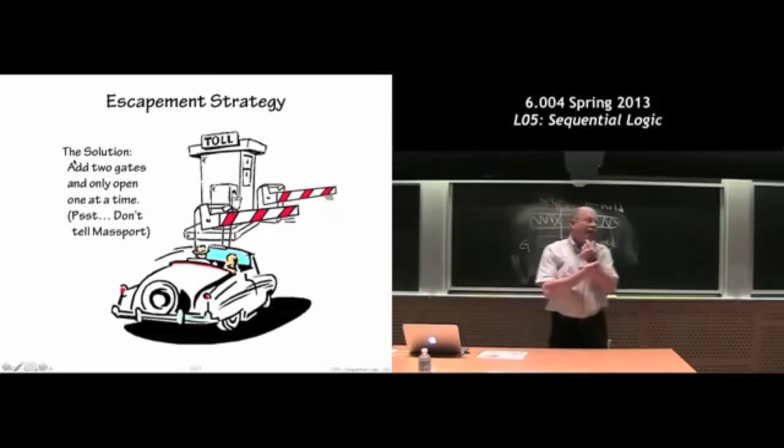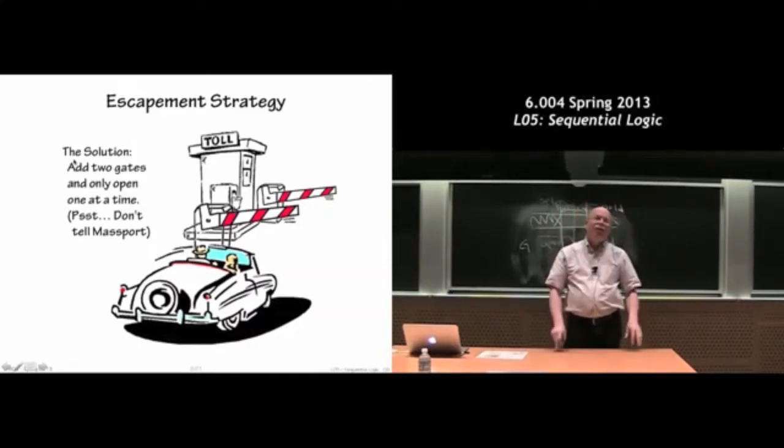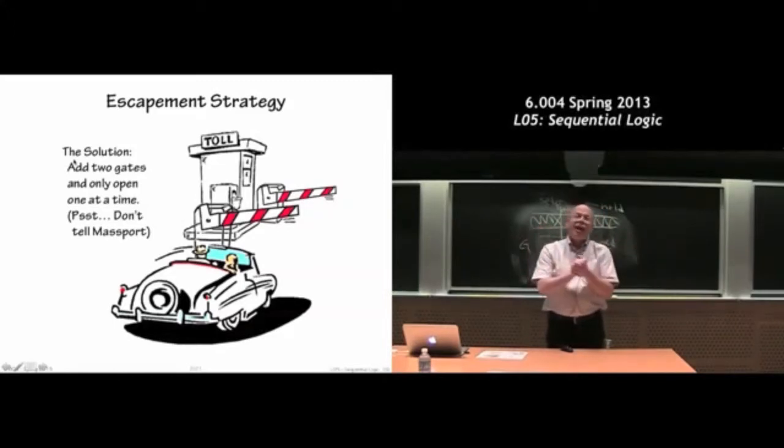The word escapement is actually the name for a particular little mechanical piece in your watch. So if you actually open up a mechanical watch, I don't know if anybody here owns a mechanical watch, but if you opened up one in the back, you discover that the gear that's actually connected to the spring itself has this little rocker bar that goes tick, tick, tick.